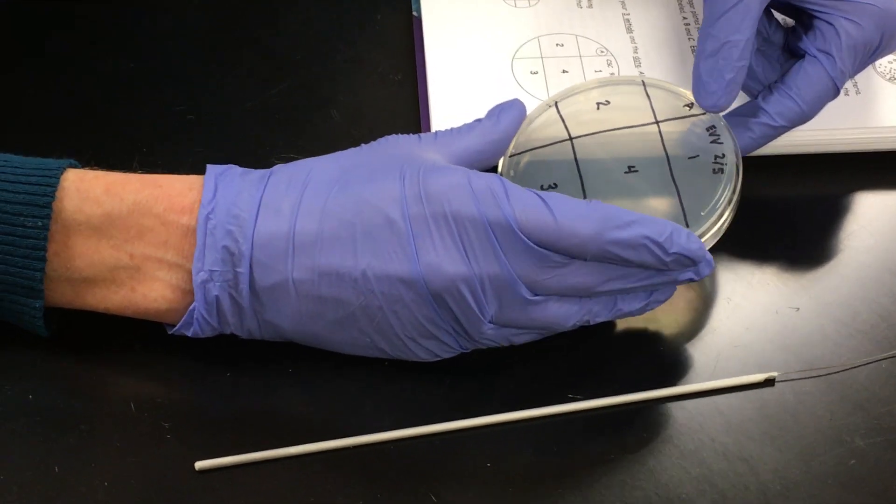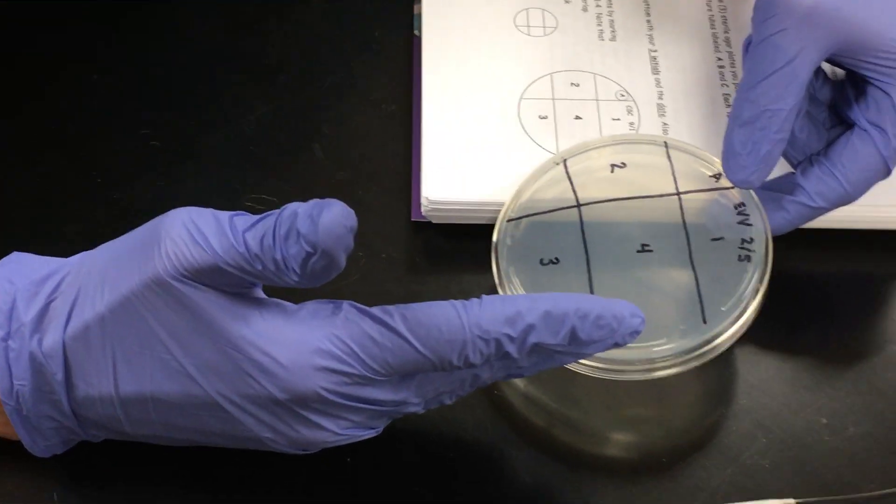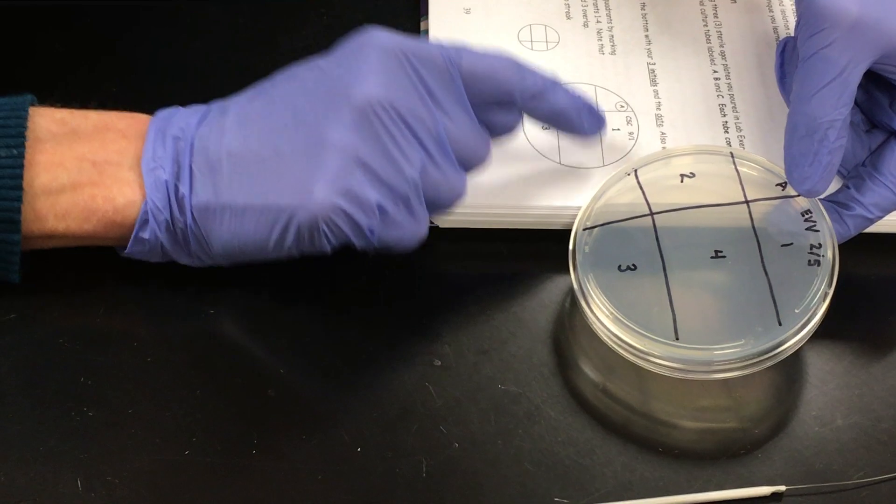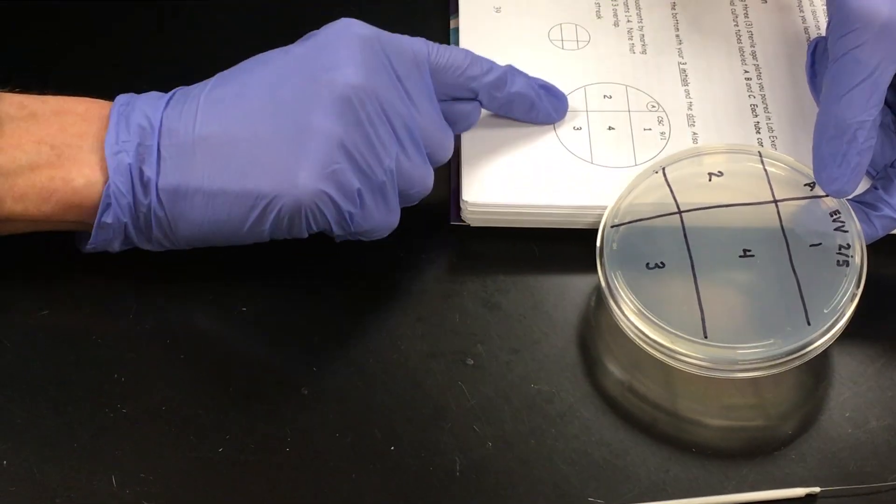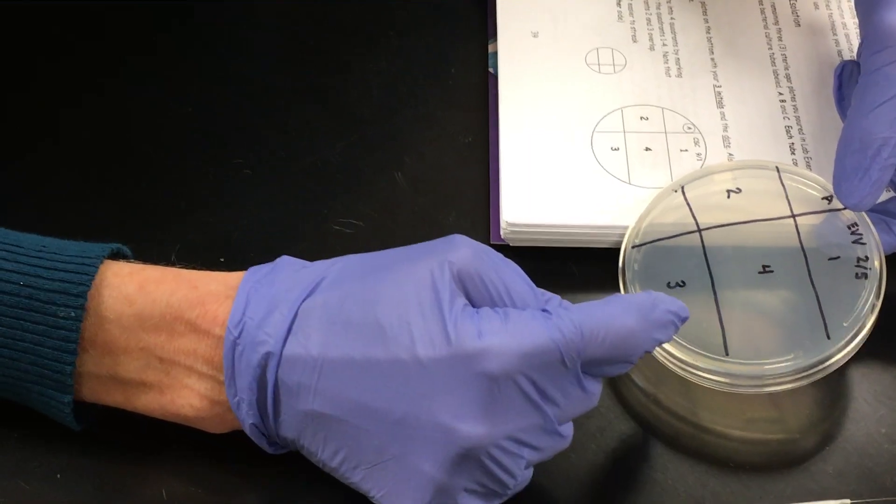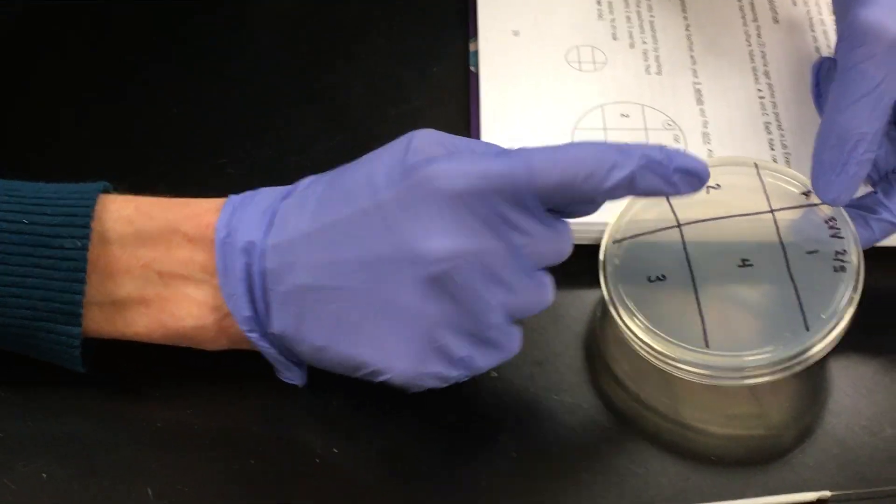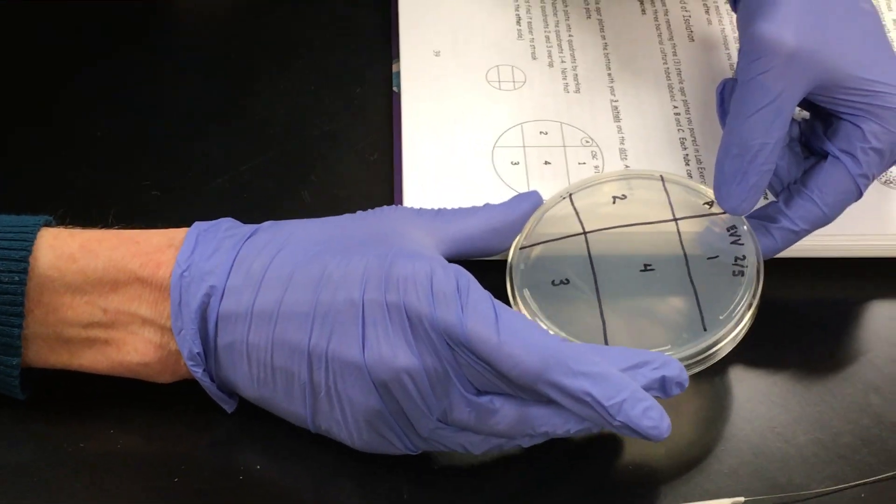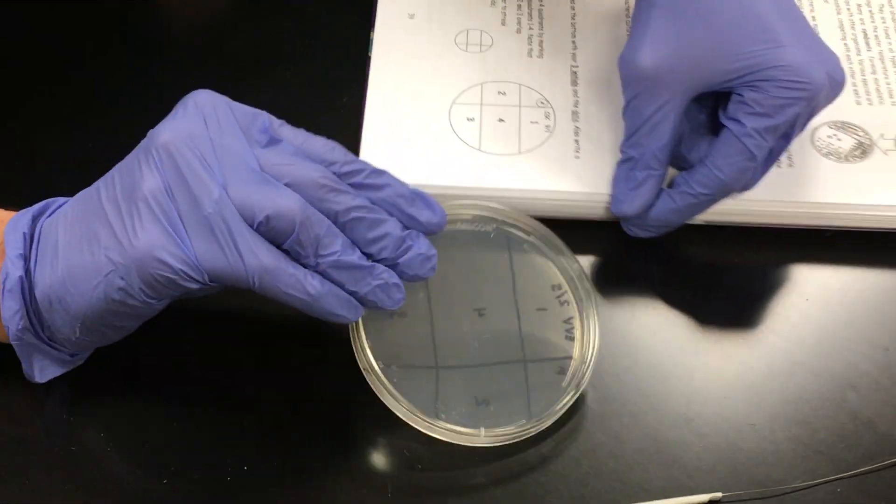When you draw your lines think of them in thirds. And so this is a third, this is a third, and we're drawing this about a third. And then you're going to label your quadrants one, four, three, and two. And once you have it labeled just like this, then you're going to turn it over.